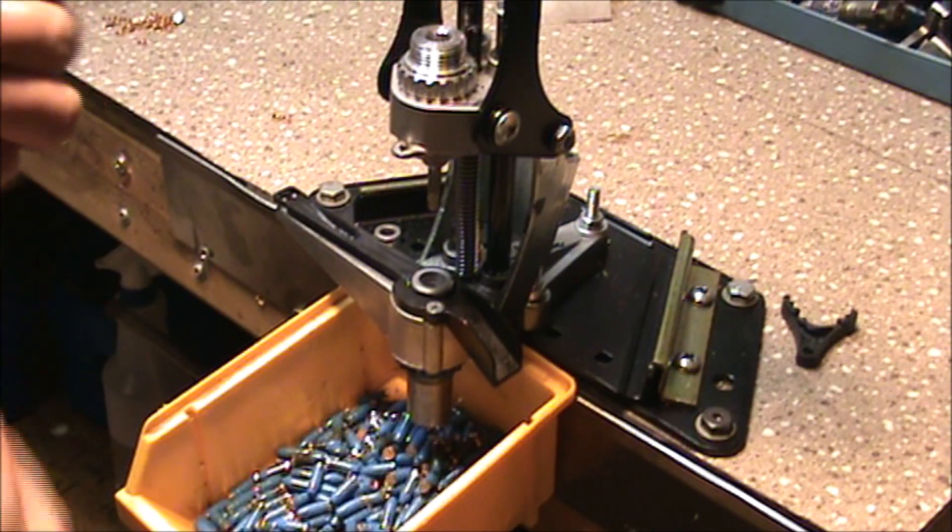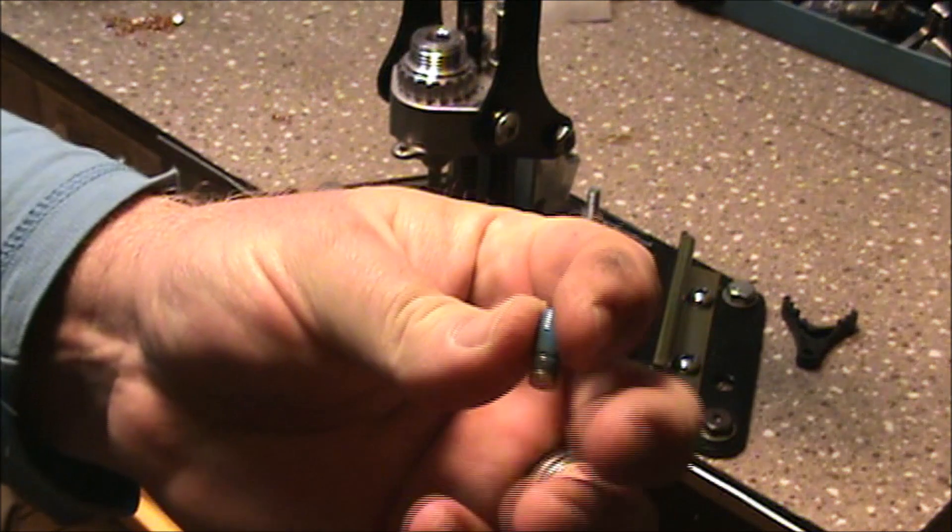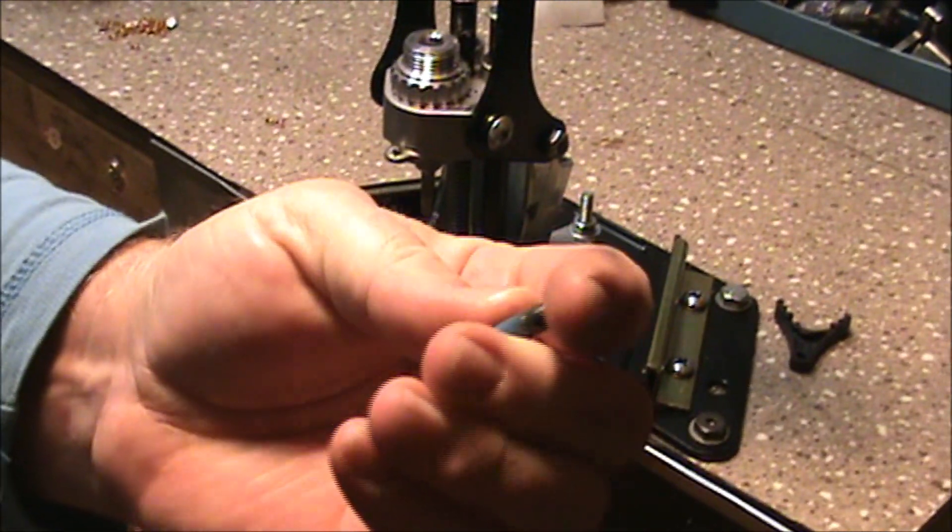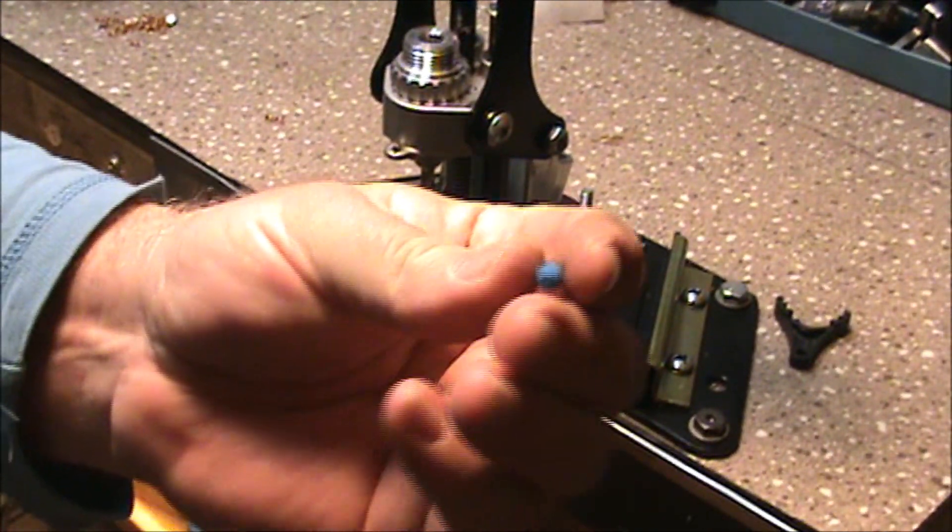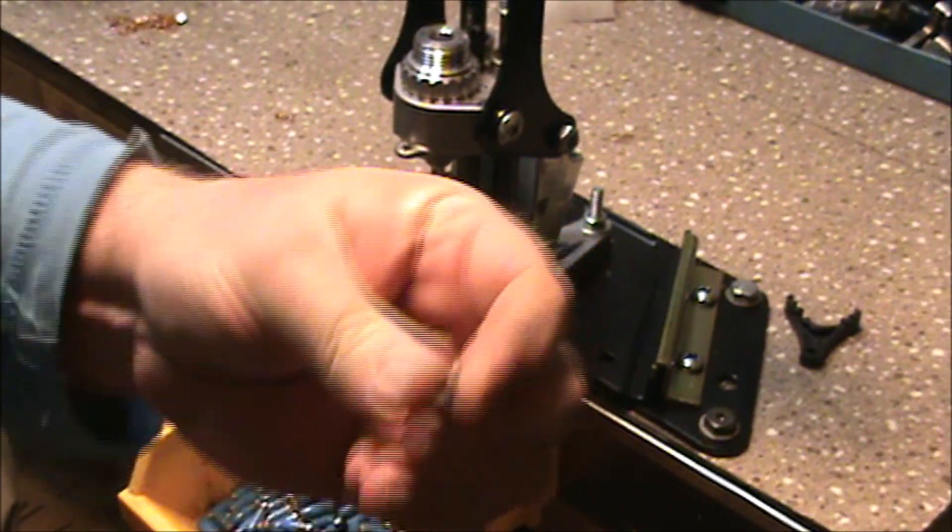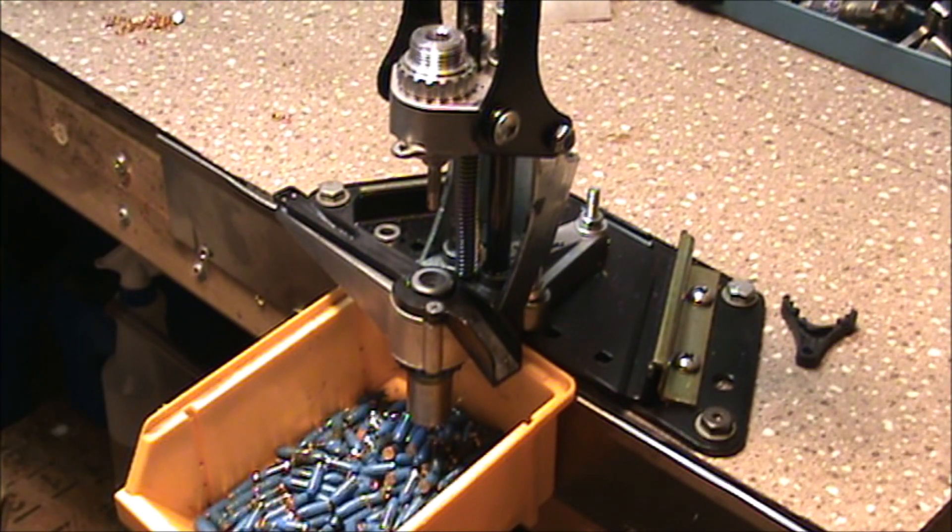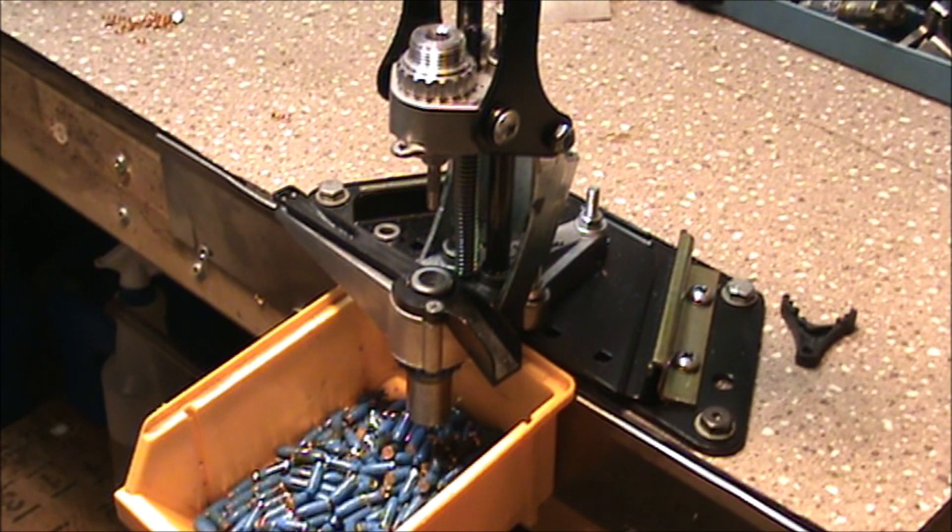But like I said, it makes a nice little 55 grain gas check bullet, and these things when they open up, they flatten out to about the size of a dime.